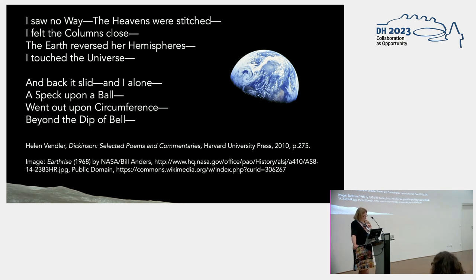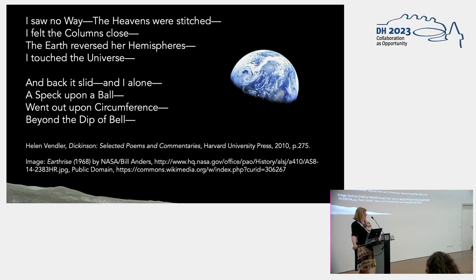There are suggestive words that imply movement of various sorts — stitched, reversed, slid, touched, went out — but are these shifts physical, conceptual, epistemological, or some combination of all three? The poem also keeps in play the sense of striking spatial contrast by its repeated invocations of 'I' in contrast to these other larger elements. This poem always seems the more remarkable to me because Dickinson wrote it in the 19th century, long before those first images of the earth from space.